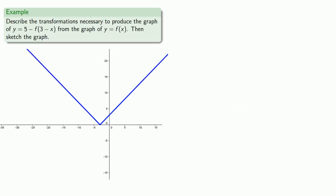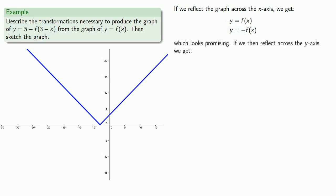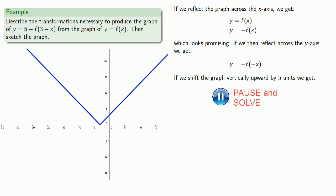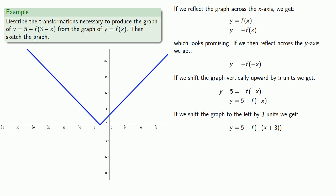Let's try to do our reflections and stretches first. If we reflect the graph across the x-axis, the new graph will have an equation — solving for y shows some similarity with what we're going for. If we then reflect across the y-axis, our new graph will have an equation that's looking good because we not only have the minus f but also the minus x. If we shift our graph vertically upward by five units, solving for y gives us something even closer to what we want. Now let's shift the graph to the left by three units — being careful to use parentheses so we're only replacing x with x plus three — and this gives us y equals five minus f of minus x minus three.